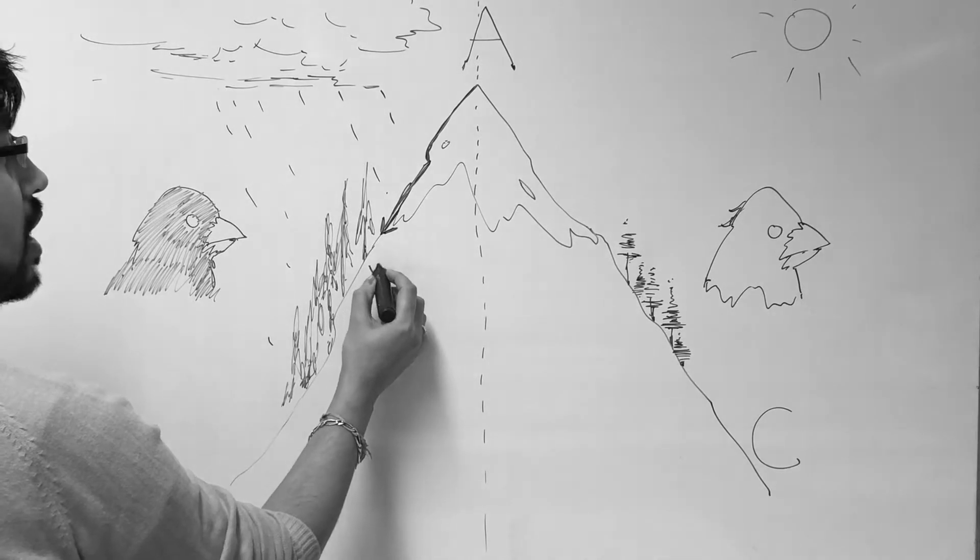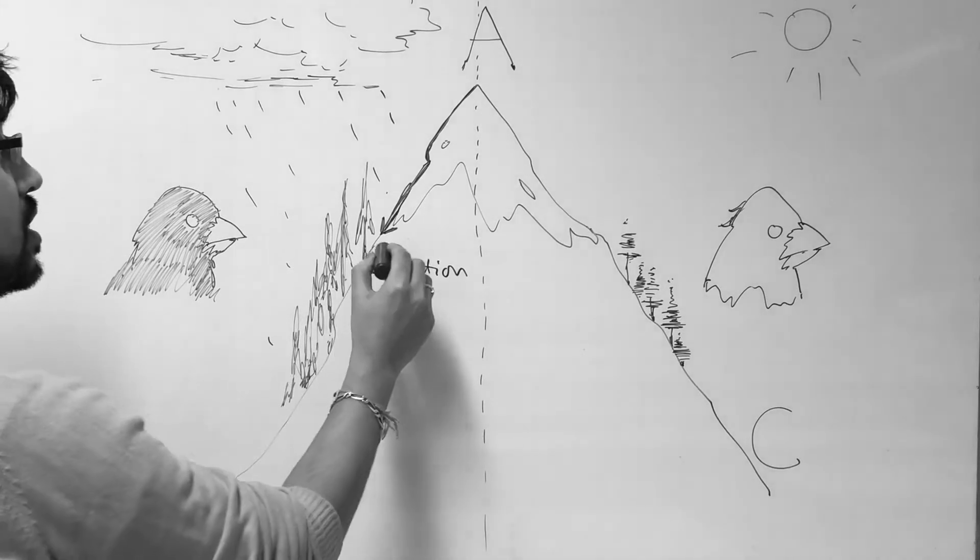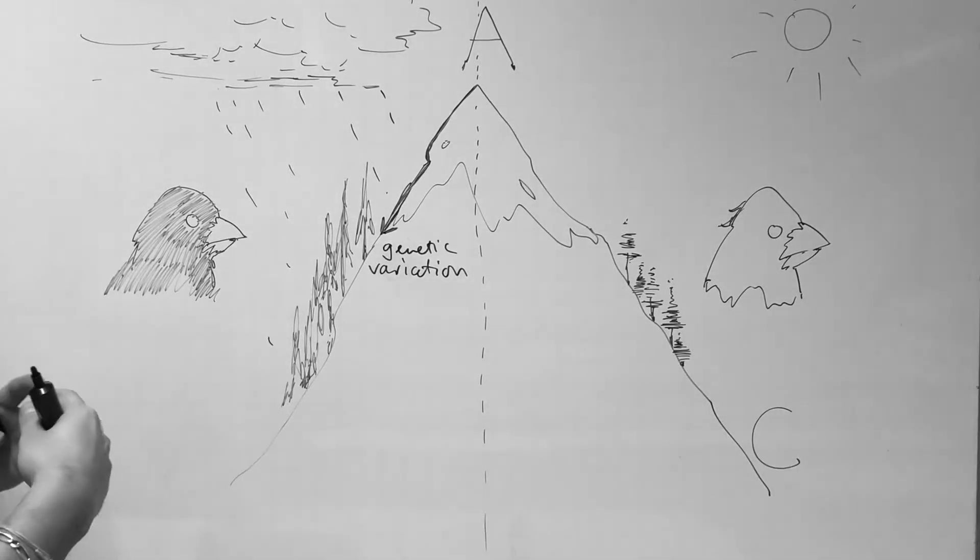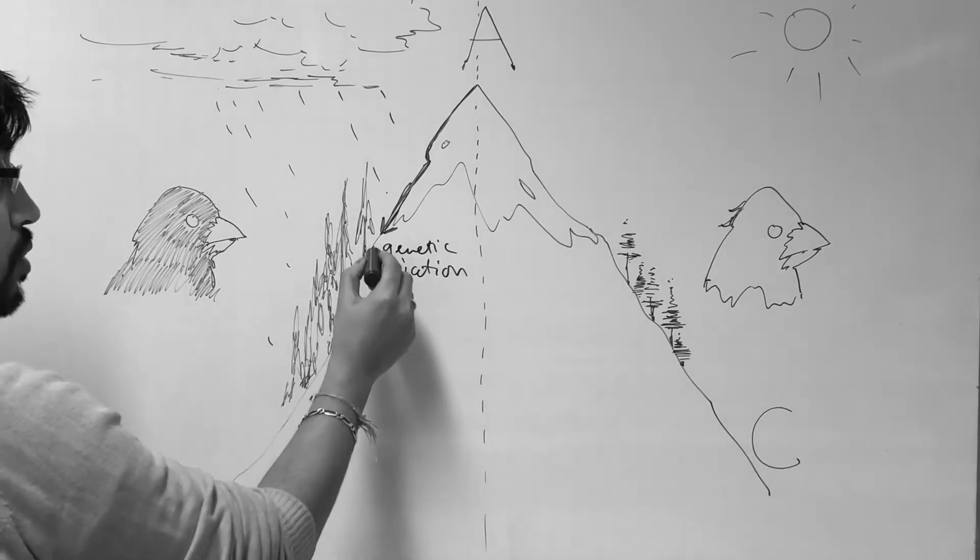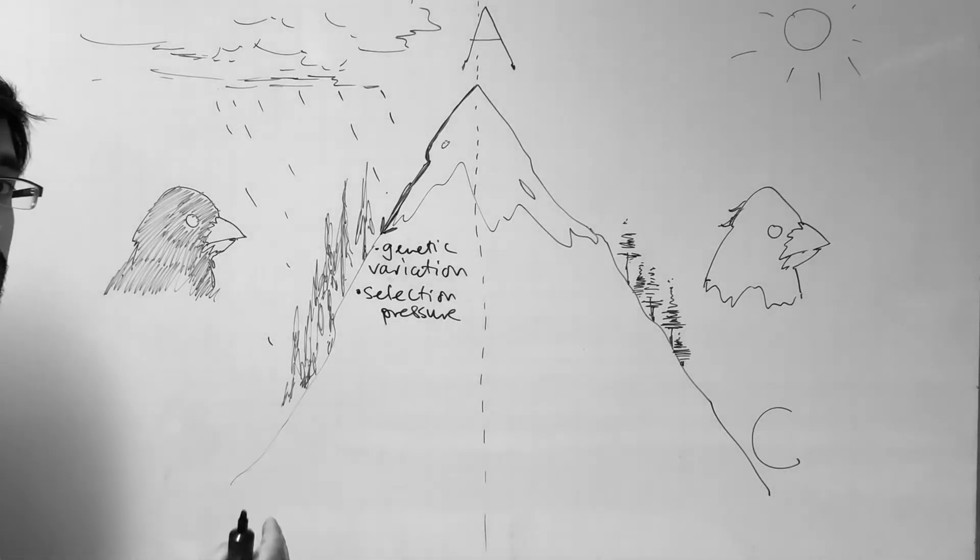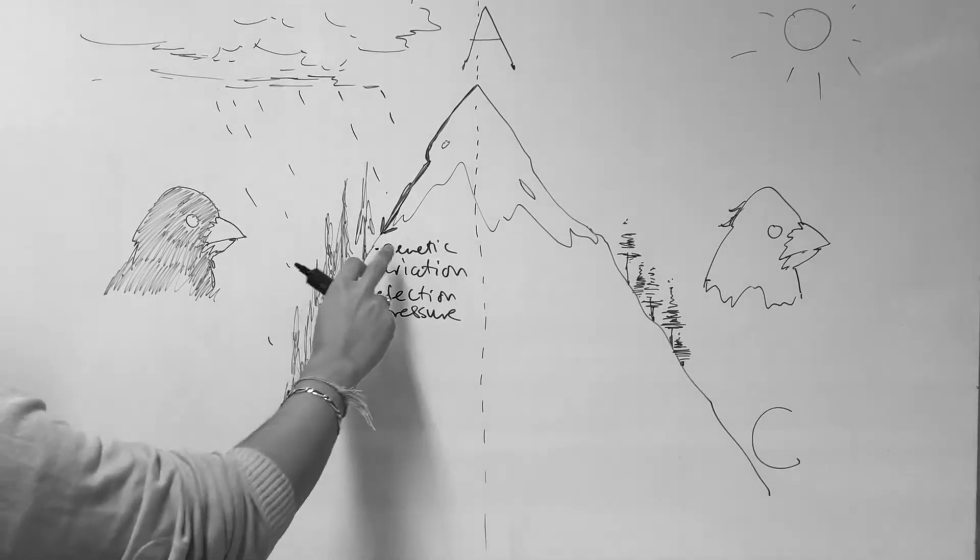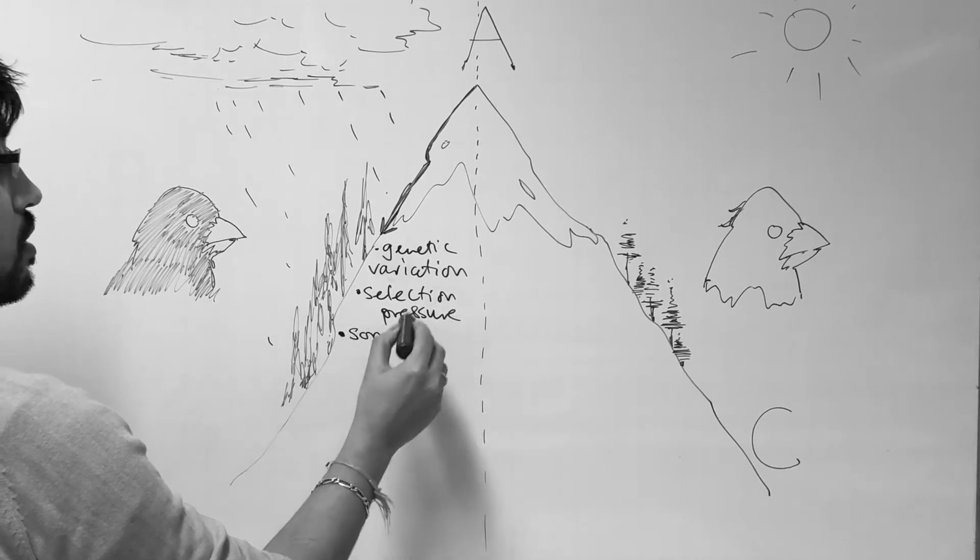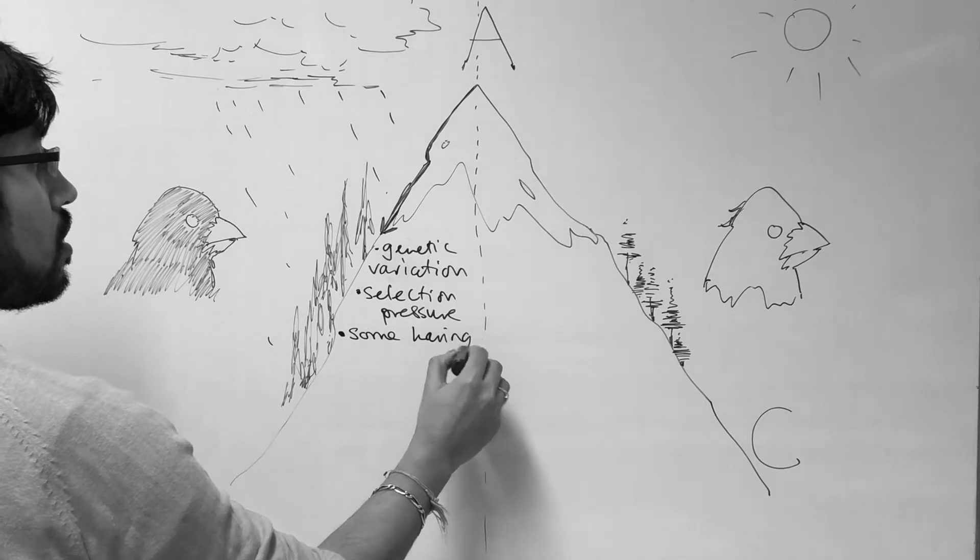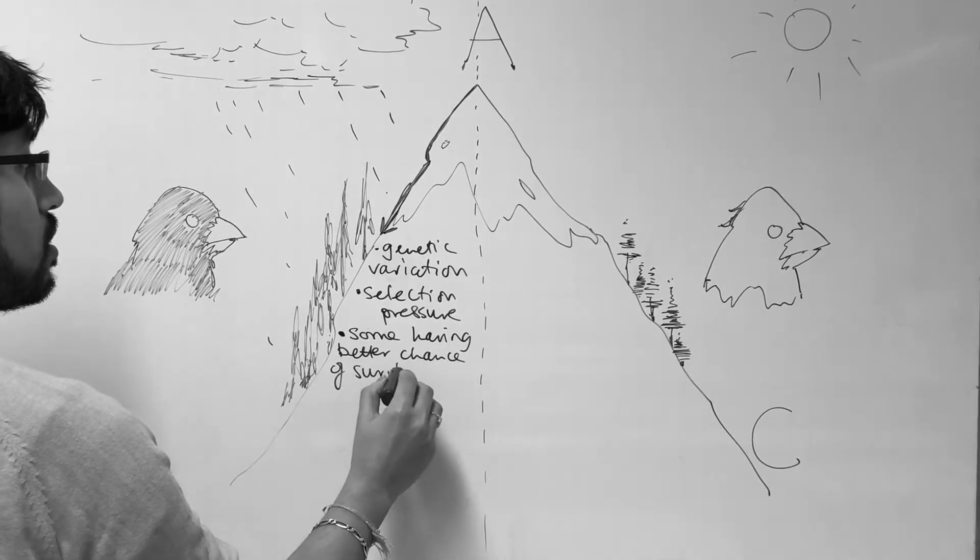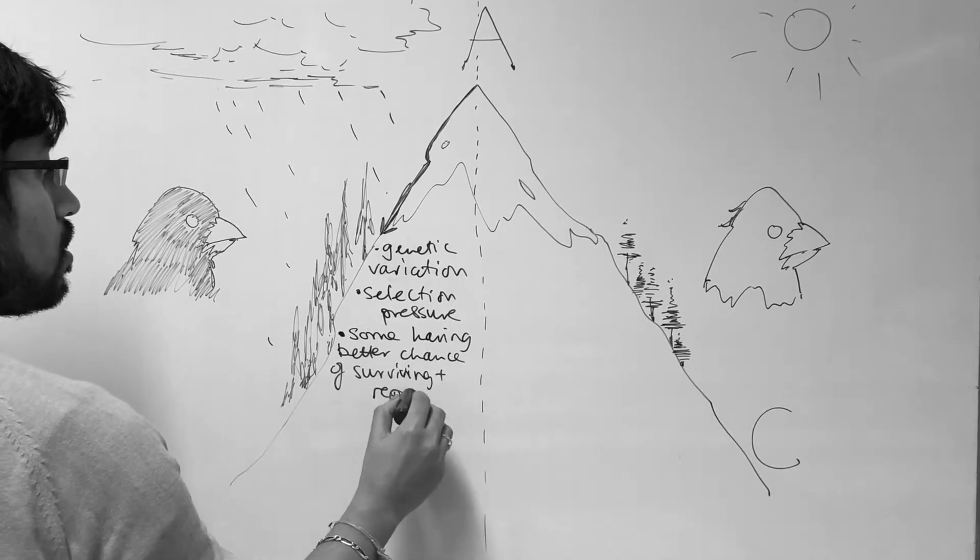That population is going to have genetic variation. There's variation in that population and also there is this struggle to survive caused by selection pressures. There must be a selection pressure which means some of those organisms have a better chance of surviving than others. So genetic variation plus selection pressure basically gives you some organisms having a better chance of surviving and reproducing.